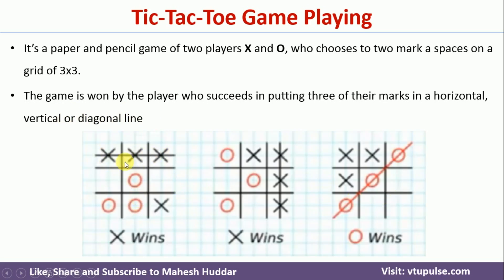In this first case, X has placed three of his marks horizontally, so X is the winner. In another case, X has placed his moves in a vertical line, so X is the winner there. In this case, O has placed his marks on the diagonal direction, so O is the winner.